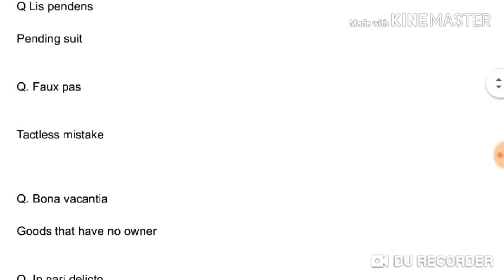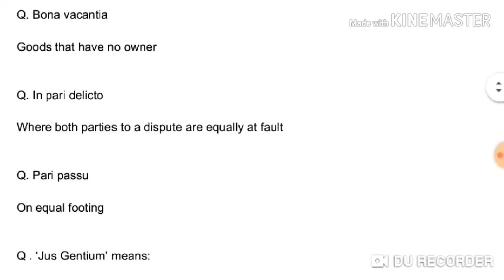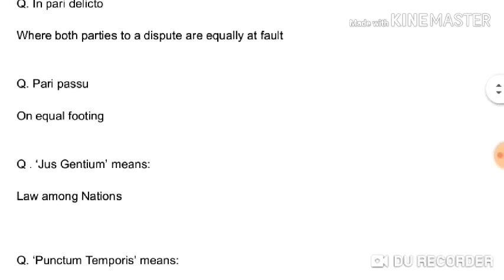Lis pendens means a pending suit. Whenever a case is filed before a court and over a period of time there is no decision over it, this type of suit is called lis pendens or a pending suit. Lapsus calami means a tactless mistake — also very important. Bona vacantia means goods that have no owner; sometimes there are goods but there is no owner to claim right over them.